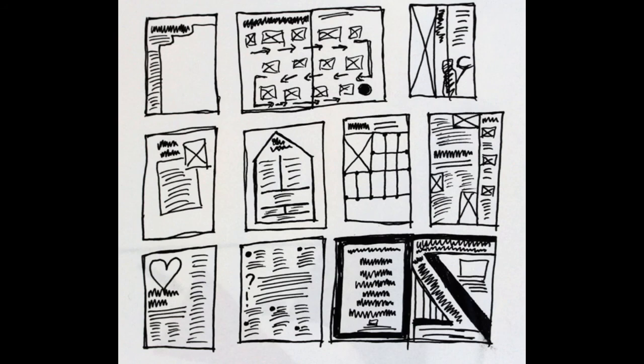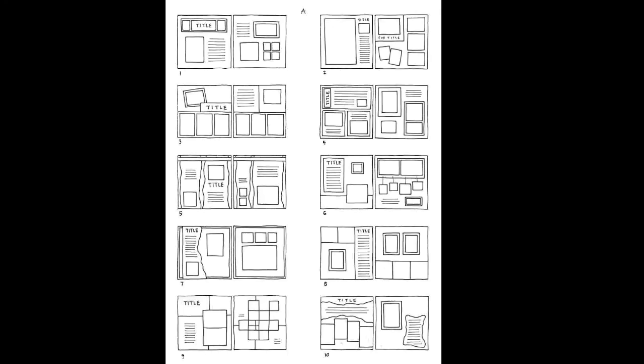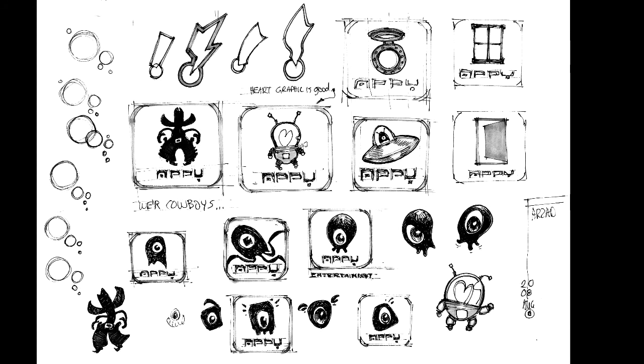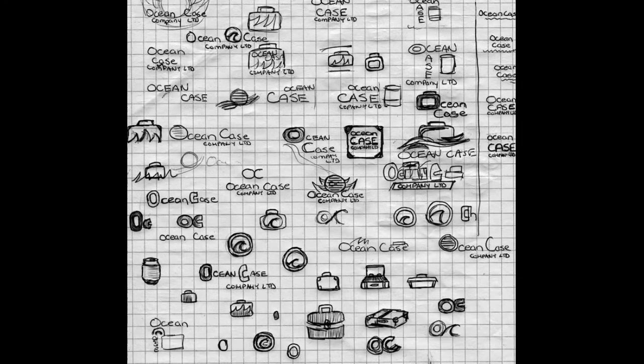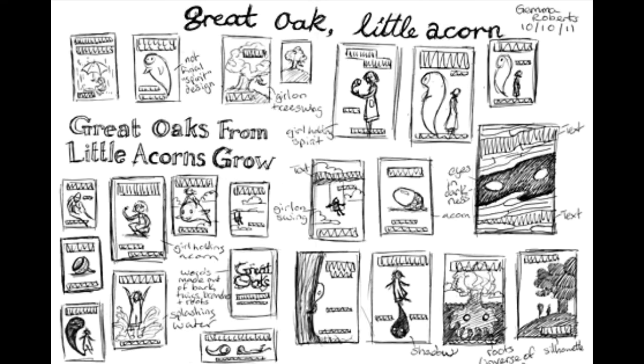Thumbnail layouts are quick sketches used to explore many layout ideas that a designer may have about a project. They're loose sketches, they're not detailed, and they only suggest general direction, hierarchy, and how the layout will look. The images should be sketched in a scaled-down proportion of the finished format size, and designers usually work up many thumbnail sketches before they select one to pursue at full size.